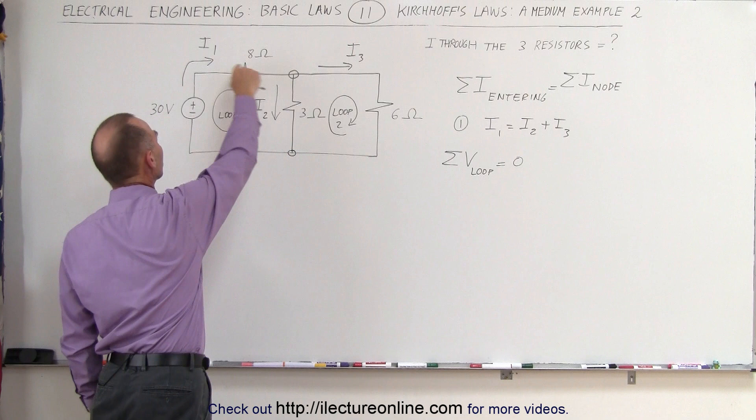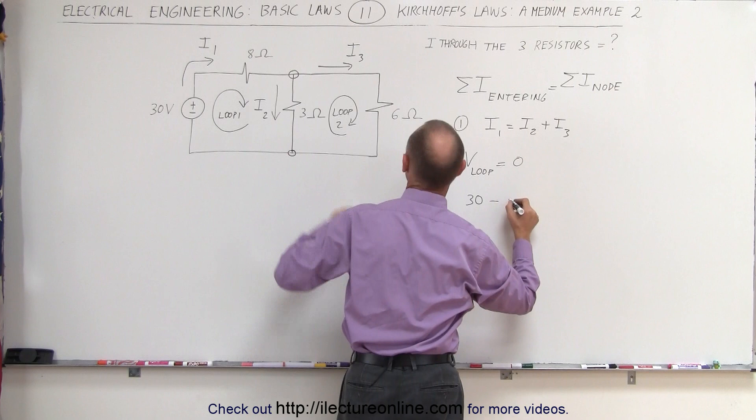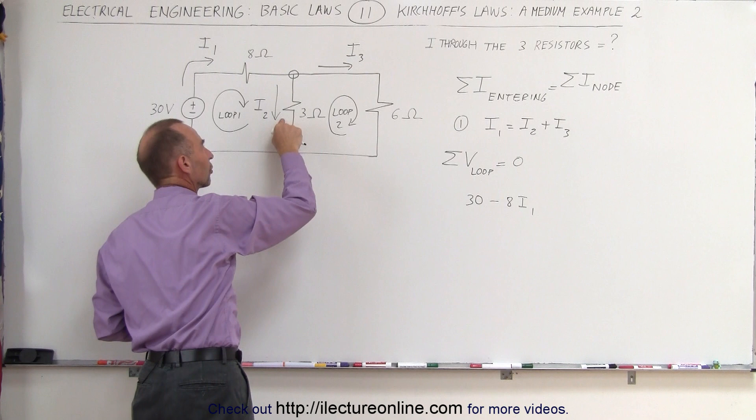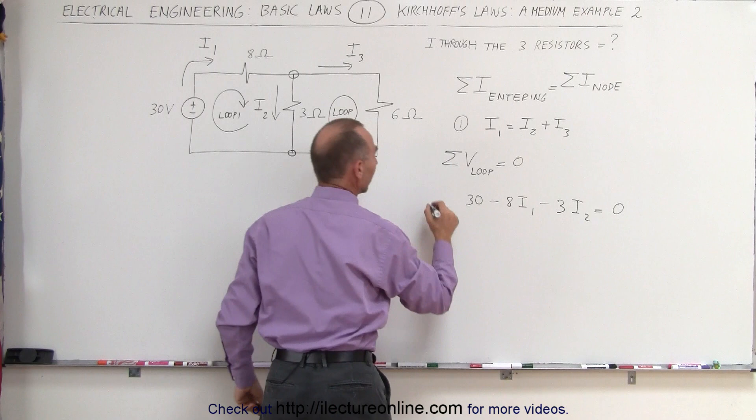Starting at this node and going around loop 1, we go across the 30-volt battery — that is a 30-volt rise. Then we go across this resistor in the same direction as the current, which means we have a voltage drop of minus 8 times the current I1. Then we go through this resistor along the same direction as the current — again that's a voltage drop — so minus 3 ohms times the current I2. Now we have made a complete loop, so this should add up to 0. That is equation number 2.